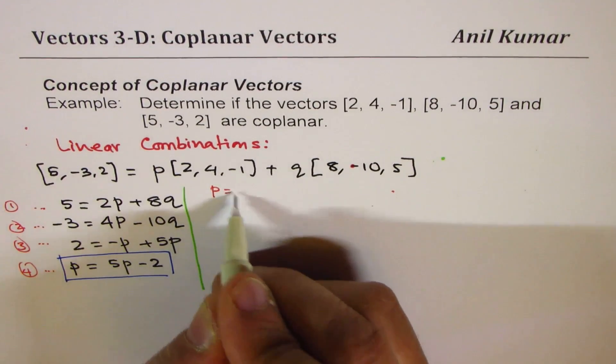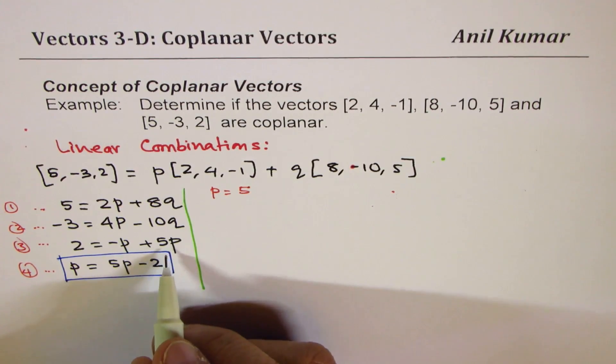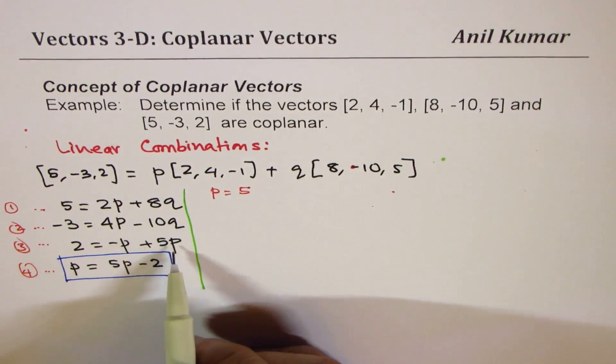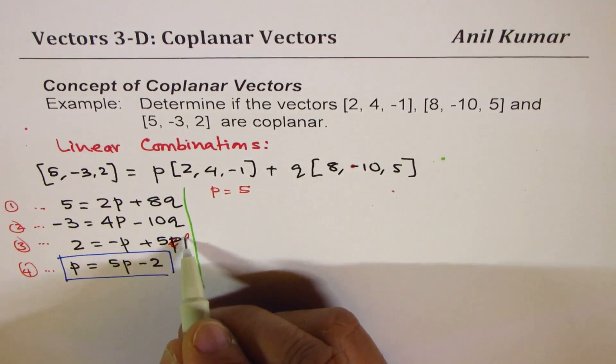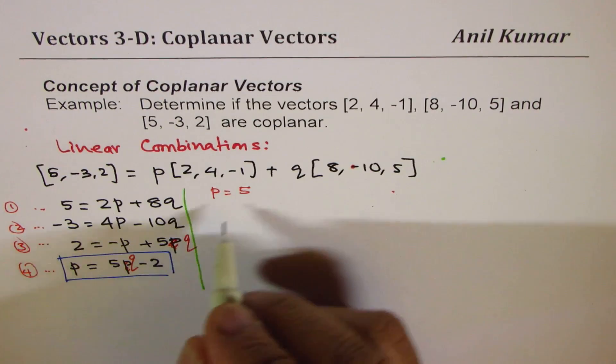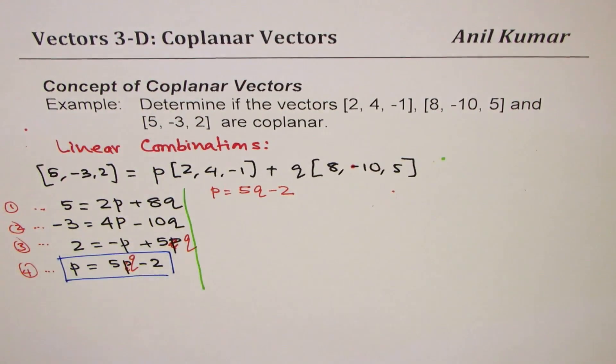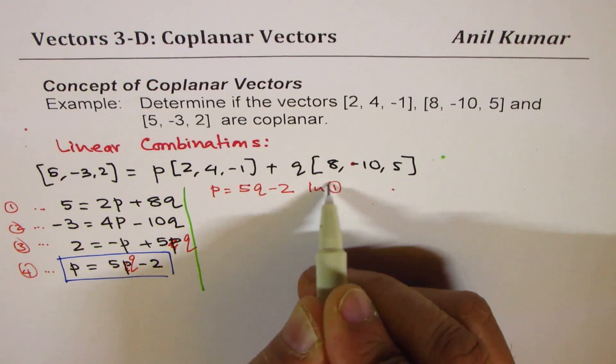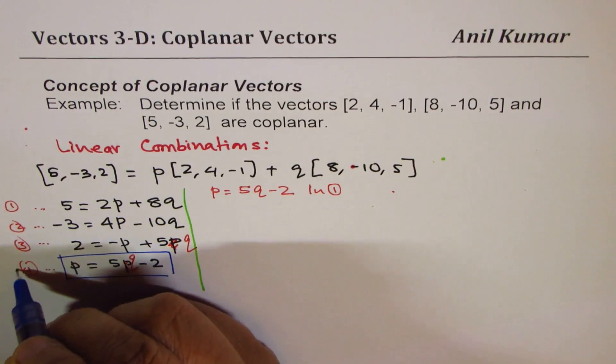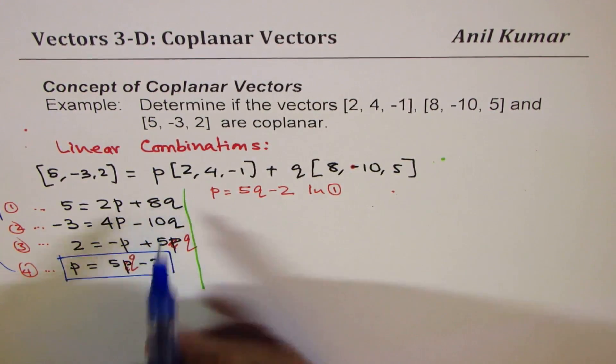I am substituting P equals to 5Q minus 2 in one of our equations. Let me do it in one. So we are substituting this value here. And then we will find what Q is.